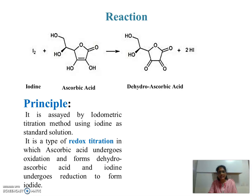The reaction is as follows: when iodine reacts with ascorbic acid, it converts to dehydroascorbic acid. The principle: it is assayed by the iodine method using iodine as a standard solution. It is also known as a redox titration, in which ascorbic acid undergoes oxidation to form dehydroascorbic acid, and iodine undergoes reduction to form iodide.